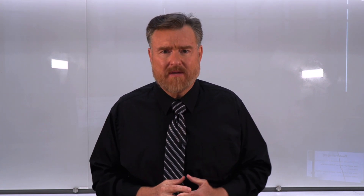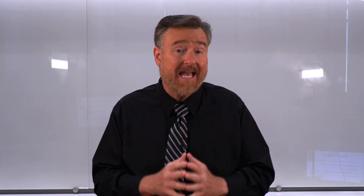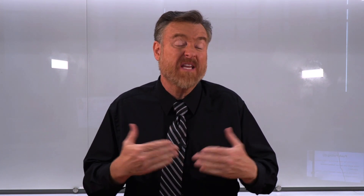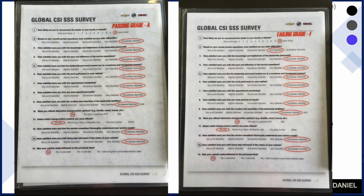Here's another example of a badly designed survey. This is a survey in which a passing grade must be a perfect grade. We can see that for every item, the customer has circled the most extreme answer possible. A non-passing grade — a failing grade — would look exactly the same as the initial survey.